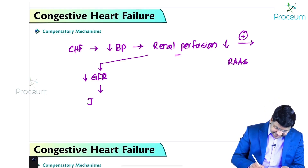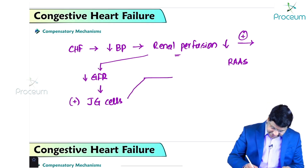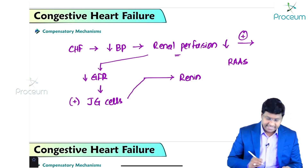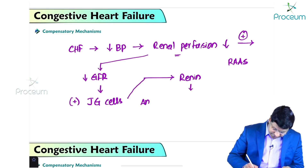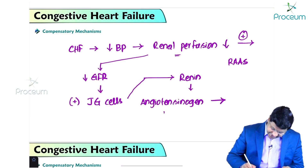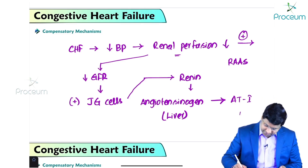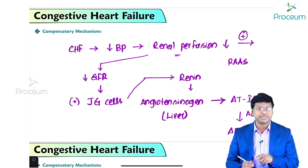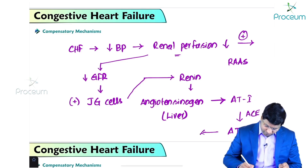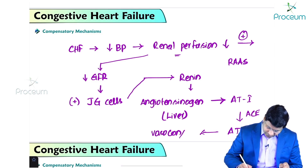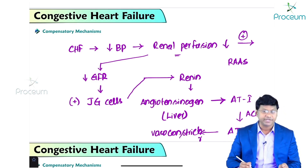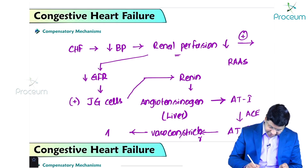Once there is a decrease in GFR, the JG cells get activated and release renin. This renin acts on angiotensinogen, a substance synthesized within the liver. Angiotensinogen is converted to angiotensin 1, which in the presence of angiotensin converting enzyme is converted to angiotensin 2 — a potent vasoconstrictor.